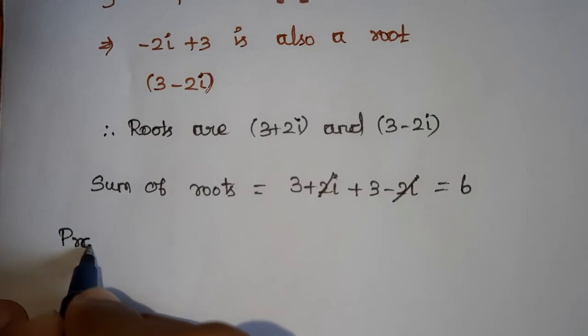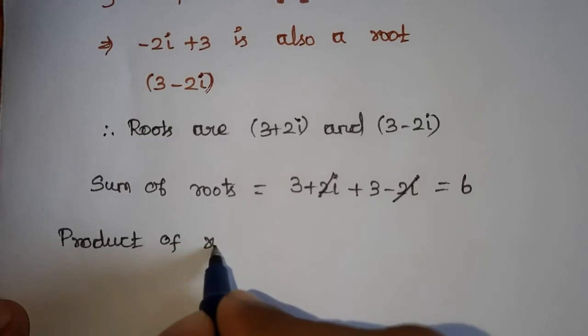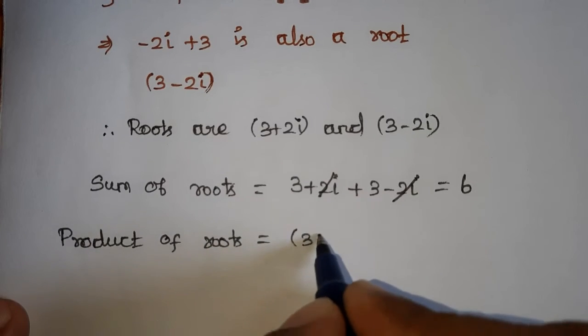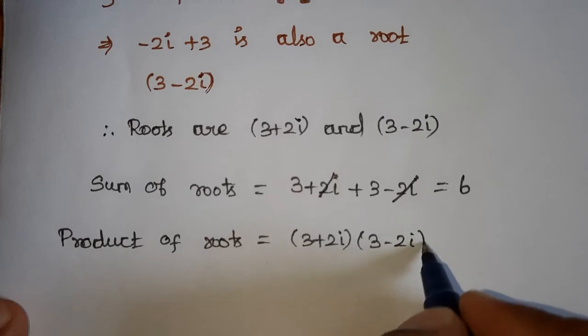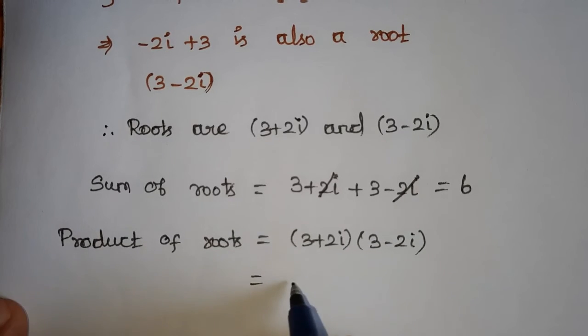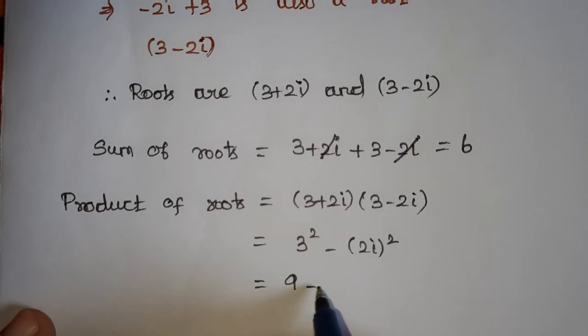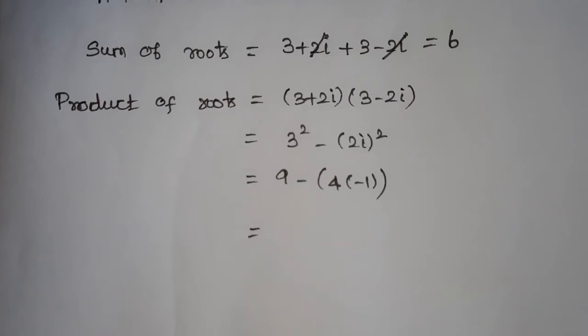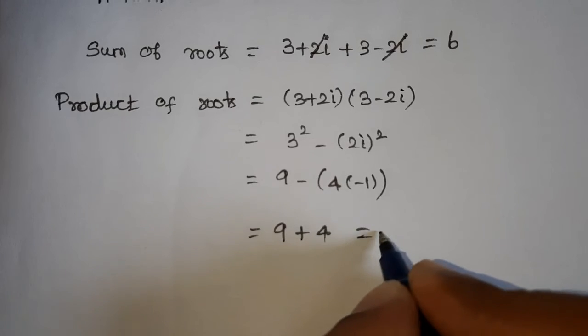Product of roots: 3 plus 2i into 3 minus 2i. Using A plus B and A minus B formula, A square minus B square. 3 square is 9, 2 square is 4, i square is minus 1. 9 minus minus 4 equals 9 plus 4 equals 13.